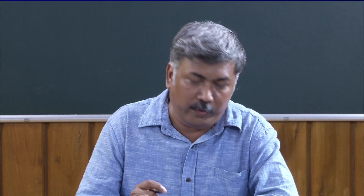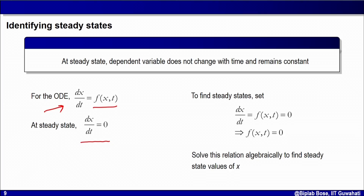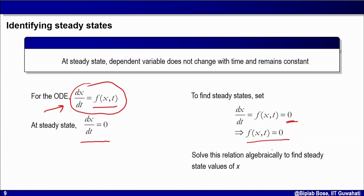By mathematical definition, if I have an ODE which is dx/dt equal to f(x, t), then the steady state is where dx/dt is equal to 0. Now how should I find that steady state? Suppose I have been given a function f(x, t) and dx/dt is equal to f(x, t). I will put that equal to 0, then simply do algebra so that f(x, t) is equal to 0, and separate out x to get the value of x for which dx/dt is equal to 0.